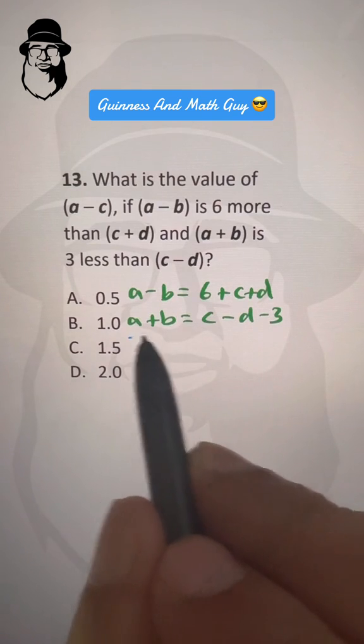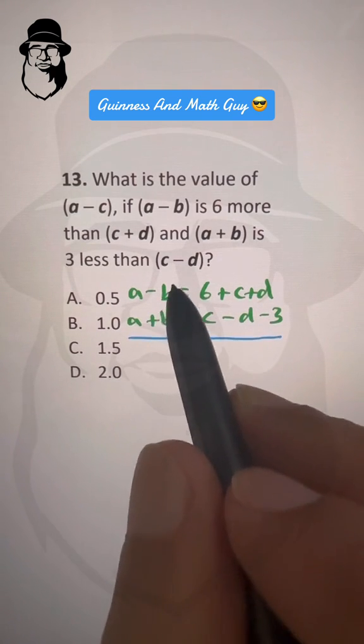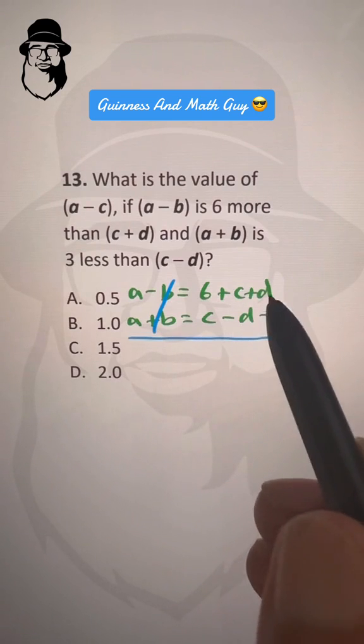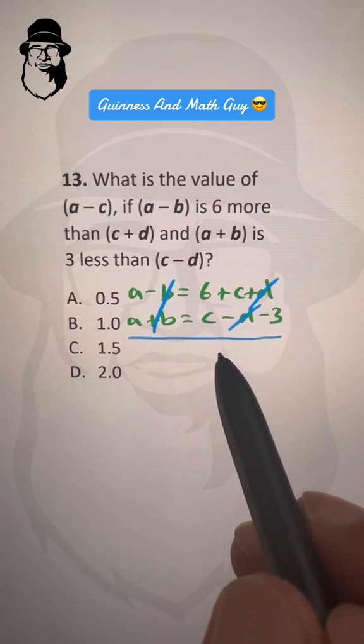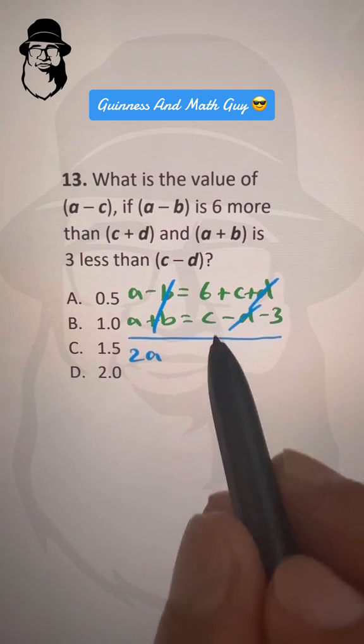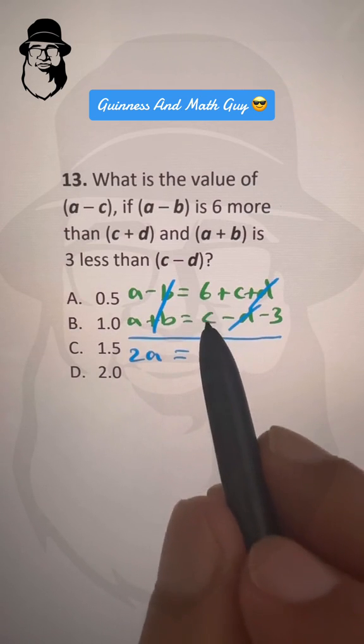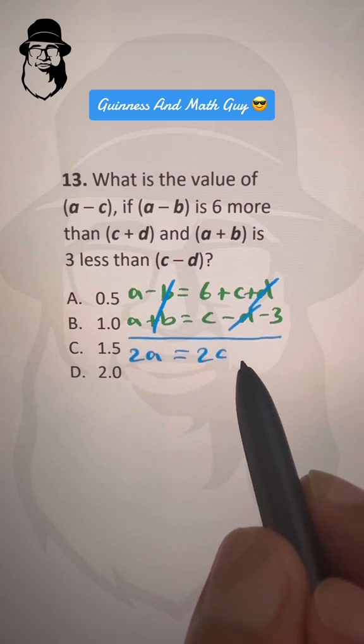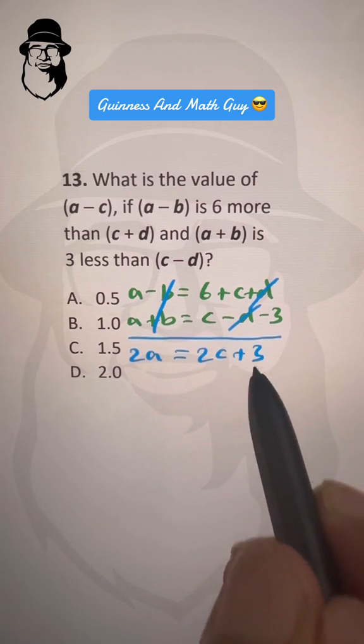If we add these two equations, the B's are cancelled and the D terms cancel. So we are left with 2a equals C plus C, which is 2c, and 6 minus 3 is 3.